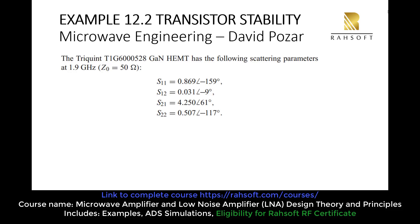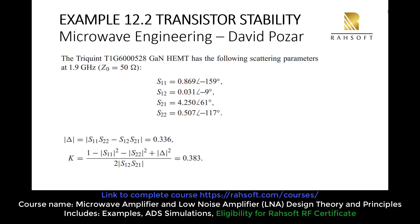First, we are going to check for unconditional stability because we don't want to bother ourselves with conditions. We have two formulas — we work with delta and the K factor. The K factor has to be greater than 1 and delta has to be less than 1 in order to have unconditional stability.